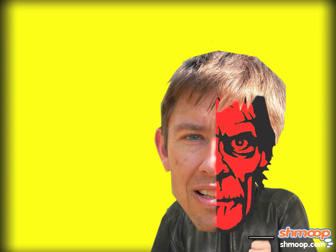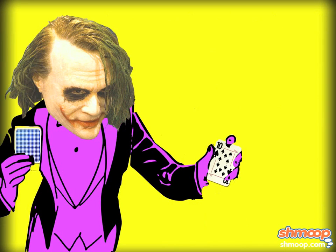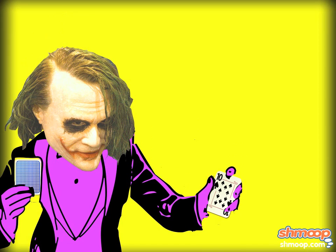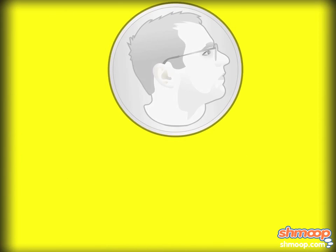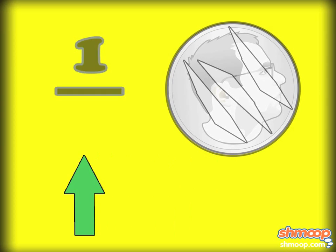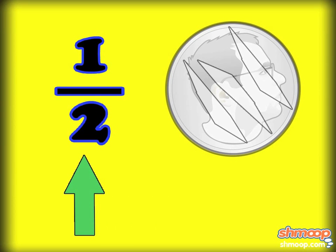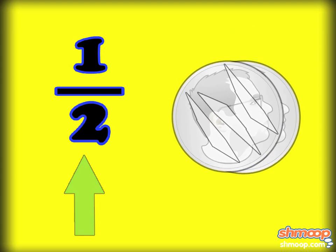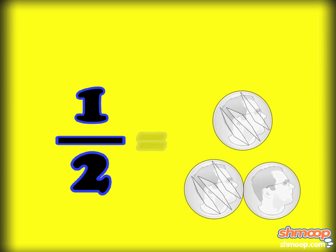So if we go back to our coin flipping versus deck of cards situation, we can start to see where the Joker went wrong. When Two-Face flips a coin, he wants to get the side with the scratched head — so that's one in the numerator. And with the coin, there are only two possible outcomes: the scratched side or the unscratched side. This means the probability is one over two that he will be evil.